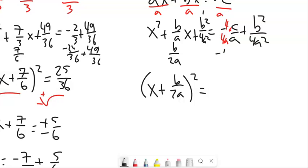Now I end up with negative 4AC plus B squared over 4A squared, because they both have that denominator of 4A squared. And I'm just going to change the order. I'm just going to write this as B squared minus 4AC.